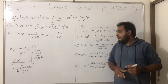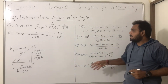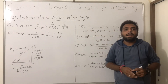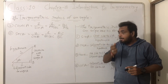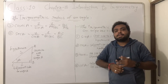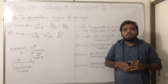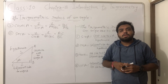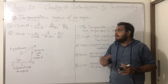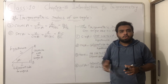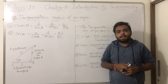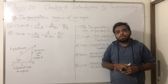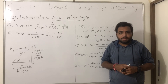So these six are the trigonometric ratios of an angle. In the next lecture, we will solve examples related to this topic. Here we end the lecture. We will meet you soon. Bye to all of you. Thanks.